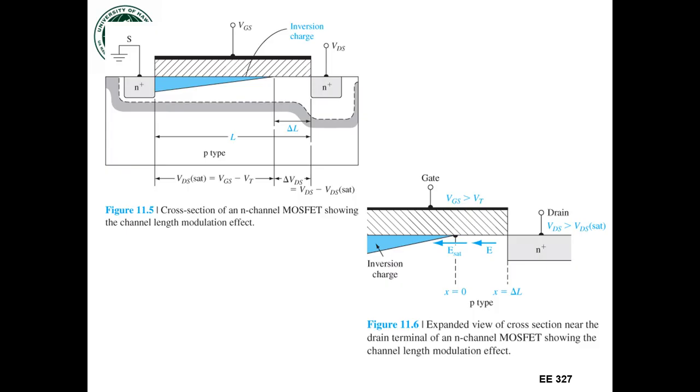And as we keep on increasing the drain to source voltage, then the point at which the channel has a depth of zero starts to move back towards the source.